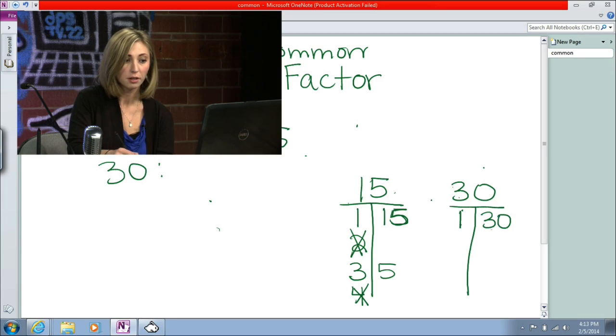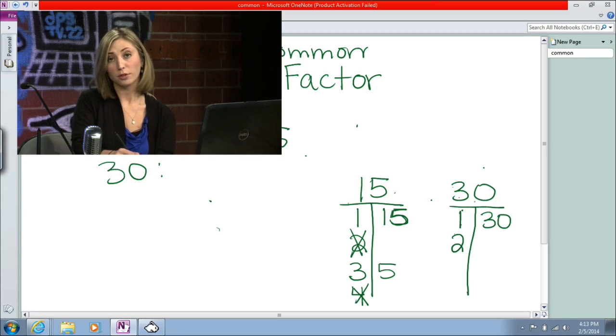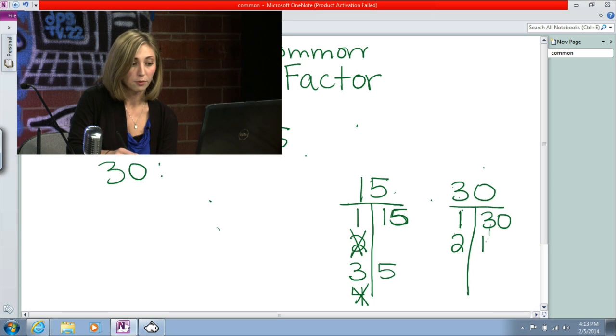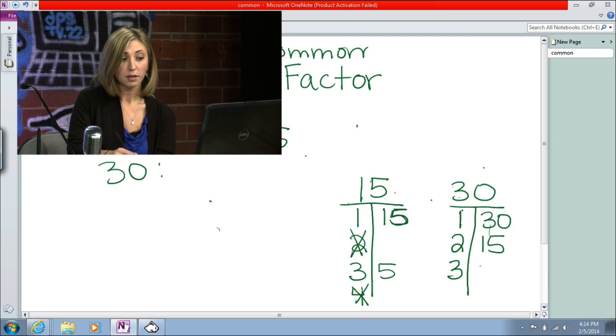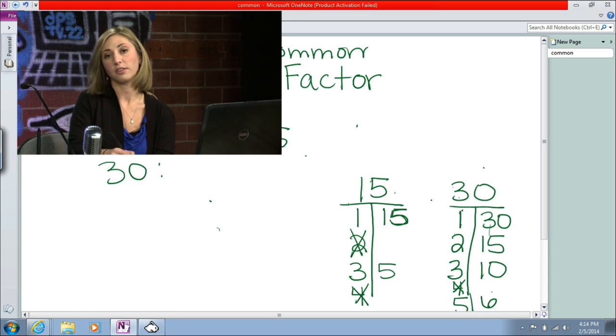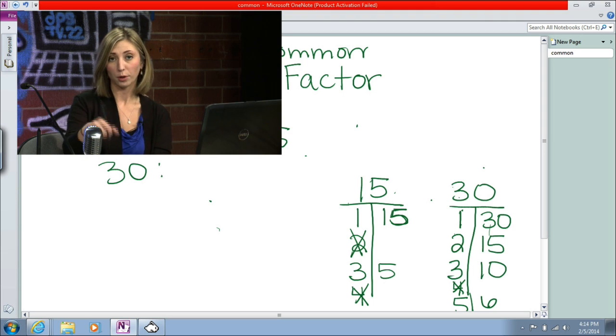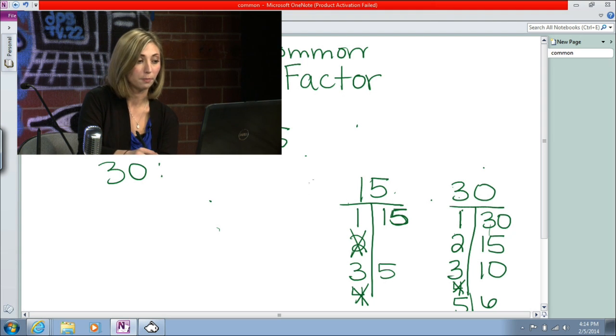So we're going to do the same for 30, because we need to find out what the common factors are. So we need the factors of 30. So we have 1 and 30, 2. We know 2 goes into 30, because 30 is even. So 2 times 15, 3 goes into 30, 3 times 10, 4 does not go into 30. Then we have 5, and 5 times 6 gives us 30. And we've gotten to the point where we are repeating factors. So now we know that we have them all.